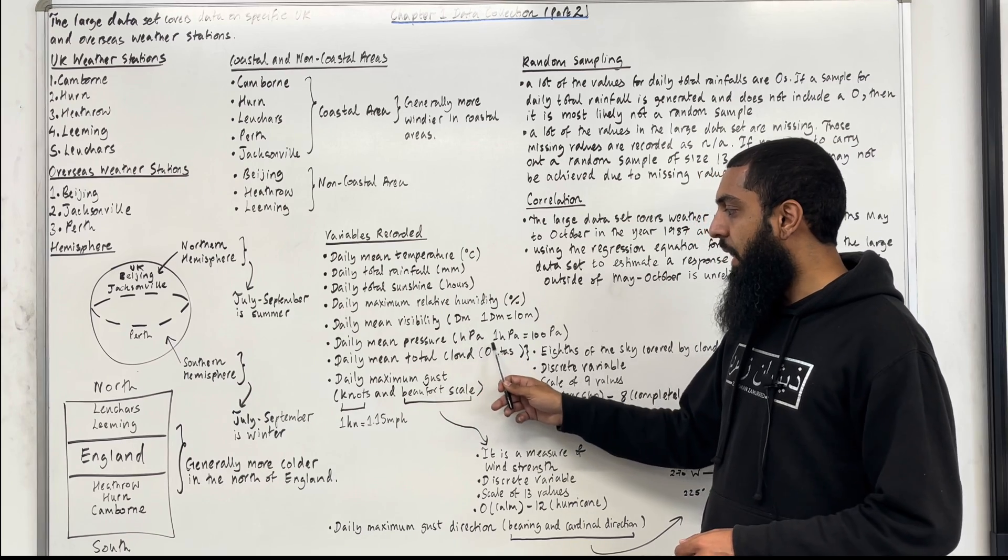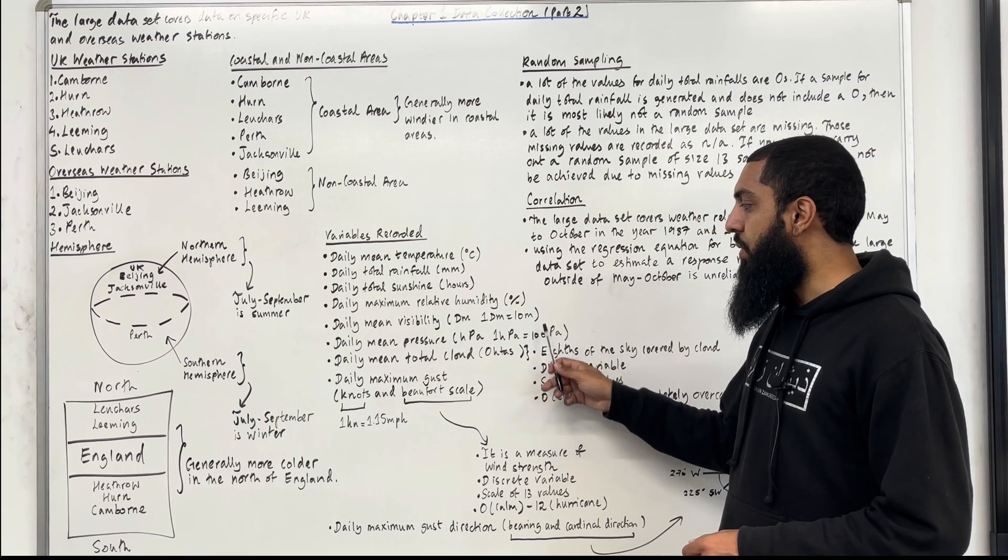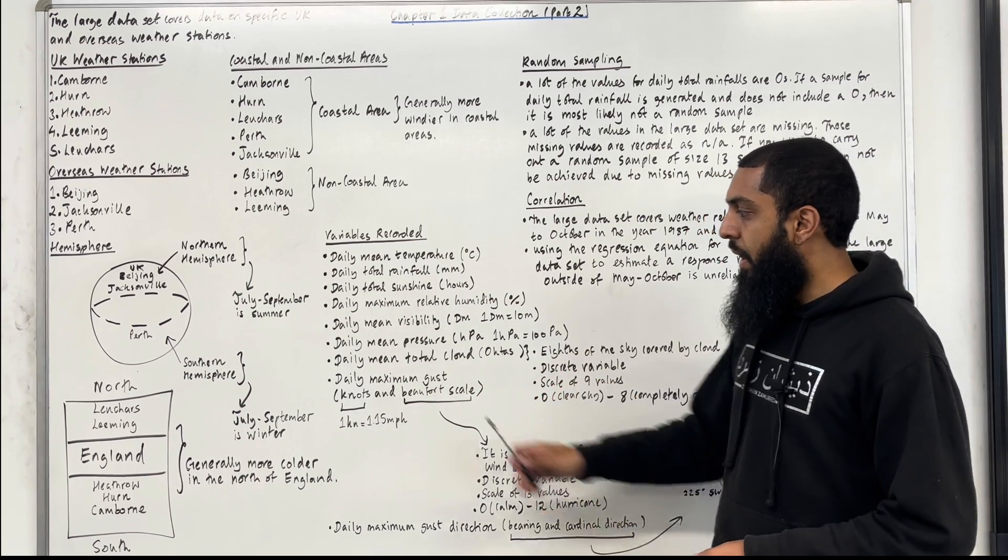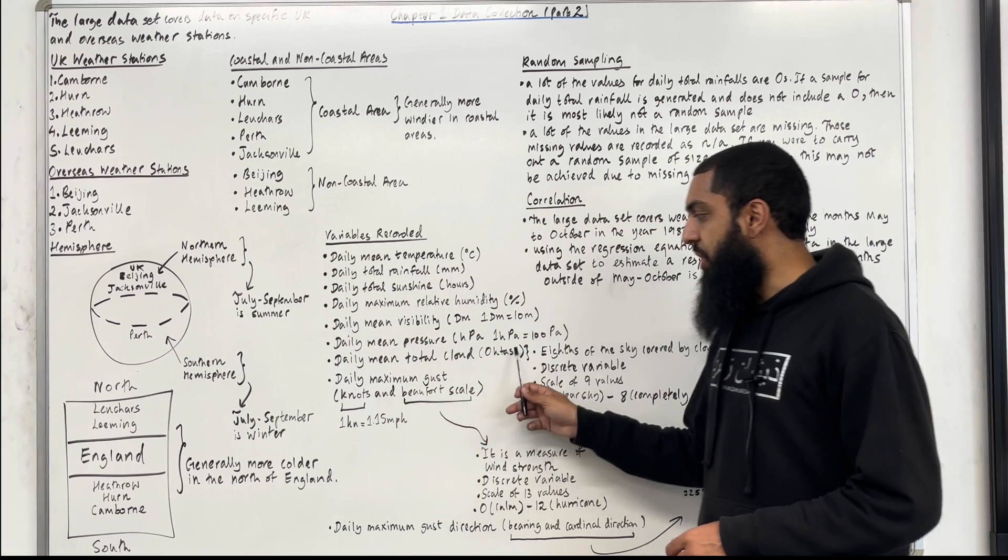Daily mean pressure in hectopascals. One hectopascal is equal to 100 pascals. Daily mean total cloud measured in oktas.